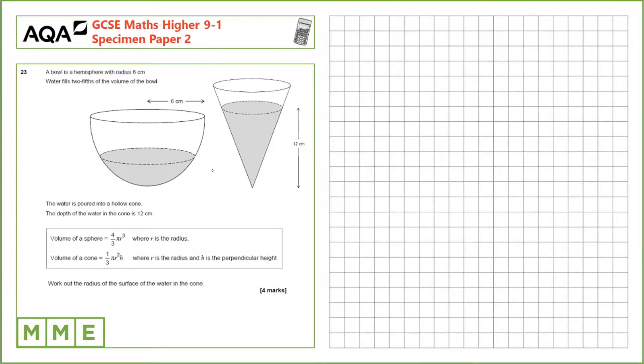Question 23. A bowl is a hemisphere with radius 6cm. Water fills 2 fifths of the volume of the bowl. The water is poured into a hollow cone. The depth of the water in the cone is 12cm.